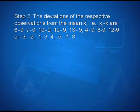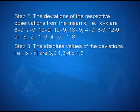In the next step we calculate the deviations of the respective observations from the mean x̄. The values xi − x̄ are: 6−9, 7−9, 10−9, 12−9, 13−9, 4−9, 8−9, and 12−9, which give −3, −2, 1, 3, 4, −5, −1, 3.